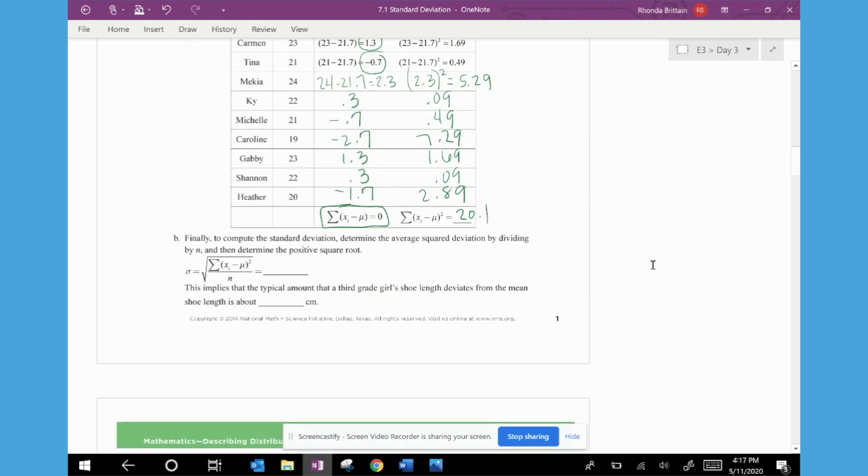And then in part B, the lesson is actually going to ask us to use this 20.1 sum and plug it in to get the standard deviation for the population. So it says finally, to compute the standard deviation, determine the average square deviation by dividing by n, then determine the positive square root. So if we take our 20.1, that is our sum of the square deviations. I had 10 girls, so 10 data values, and then I'm going to take the square root. So that calculation rounded to three decimals is 1.418 centimeters.